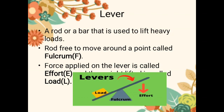The first simple machine is the lever. A lever is a rod or a bar that is used to lift heavy loads. Just look at this picture — here it is a rod or a bar which is used to lift a heavy load, and that is said to be a lever. In a lever, there are three forces applied: fulcrum, effort, and load. The center point where the rod is free to move is said to be the fulcrum (F). The force applied on the side is said to be the effort (E), and the load carried on the other side is said to be the load (L).